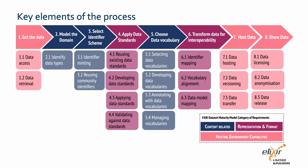Step four, apply data standards. At this step, data standard validation and identification is done to ensure the representation of the data is in community or domain specified formats for interoperability purposes. Step five, choose data vocabularies. At this step, you will look in depth about data content and harmonize it with ontologies, either existing ones, or create an application ontology tailored to your specific use case. Step six is to transform data for interoperability. You should not only represent the data in a single ontology, but also establish links and mappings to corresponding ontologies.